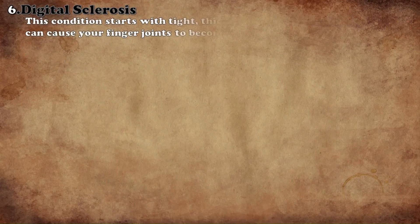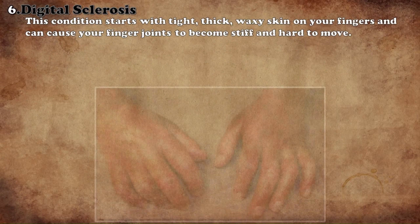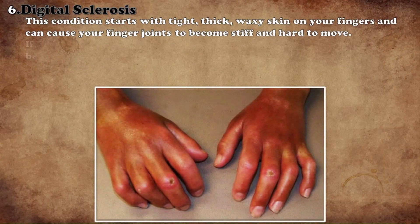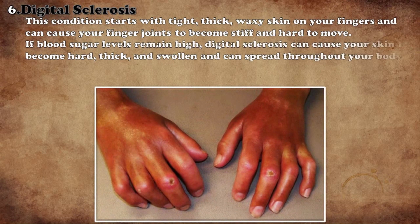Digital sclerosis is a disease that affects the hands of diabetic patients. The skin of the hands becomes thick, hard, and greasy. If the sugar is not reduced in such a condition, there is a risk of inflammation spreading throughout the body.